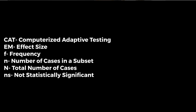Number four: there are standard statistical abbreviations. Forgive me for getting all science-y for a second. Here are a few favorite examples: uppercase CAT is computerized adaptive testing; uppercase EM is effect size; lowercase f, frequency; lowercase n, number of cases in the subset; uppercase N, total number of cases; lowercase ns, not statistically significant. In addition to the standard abbreviations, there are also all kinds of Greek characters that mean various different things — but I'm not going to get into that now. It's pretty interesting.